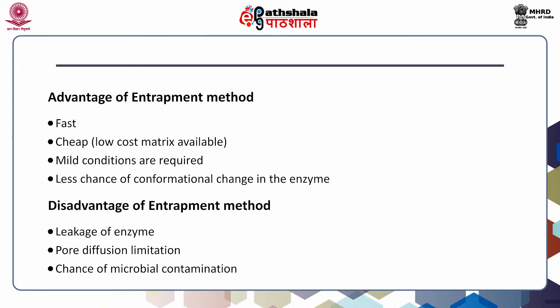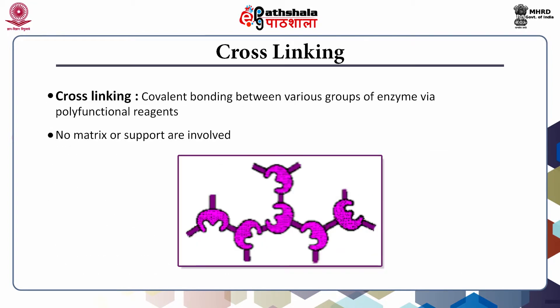Like physical and covalent methods, entrapment has advantages and disadvantages. It is fast and requires mild conditions, but the disadvantages include leakage of the enzyme, chances of microbial contamination, and diffusion limitations. The crosslinking method involves attachment of biocatalysts to each other by bi- or multifunctional reagents or ligands, forming very high molecular weight, typically insoluble aggregates. Crosslinking is a relatively simple process but is not a preferred method of immobilization as it does not use any support matrix, resulting in gelatinous, not particularly firm products. Biocatalysts immobilized this way frequently undergo conformational changes with resultant loss of activity.